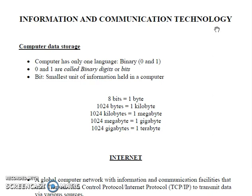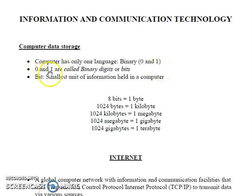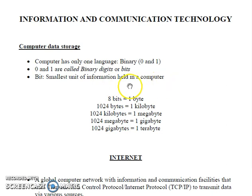First, let's talk about how computers store data. A computer has only one language that it can understand and process — binary, and in technical terms, 0 and 1. These 0 and 1 are called binary digits, or bits in short. Any data stored in the computer system is stored as a combination of these two binary digits. So a bit is the smallest unit of information held in a computer system.